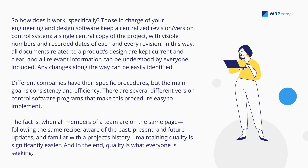So how does it work specifically? Those in charge of your engineering and design software keep a centralized revision version control system — a single central copy of the project — with visible numbers and recorded dates of each and every revision. In this way, all documents related to a product's design are kept current and clear, and all relevant information can be understood by everyone included. Any changes along the way can be easily identified. Different companies have their specific procedures, but the main goal is consistency and efficiency.